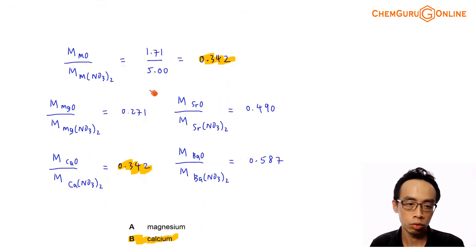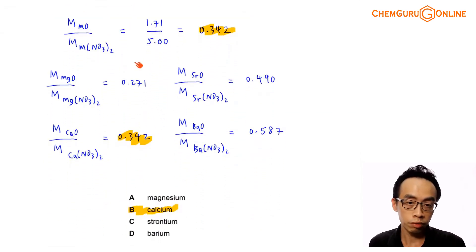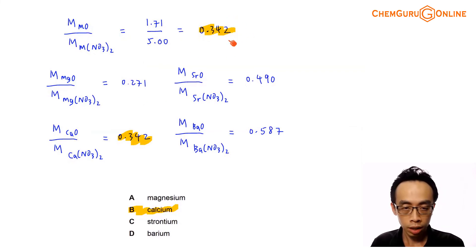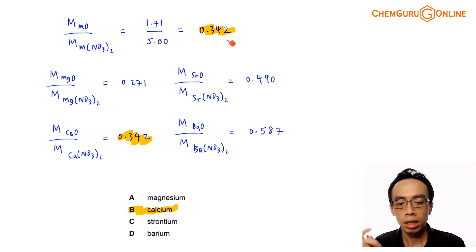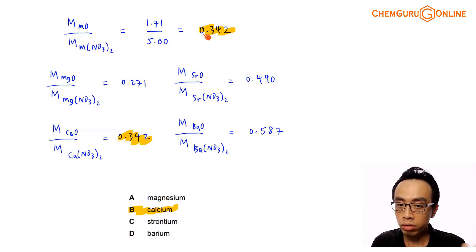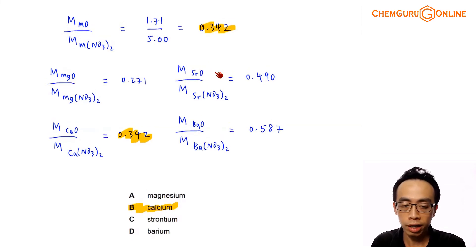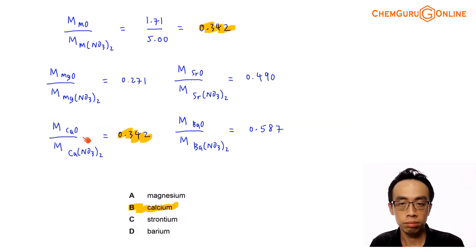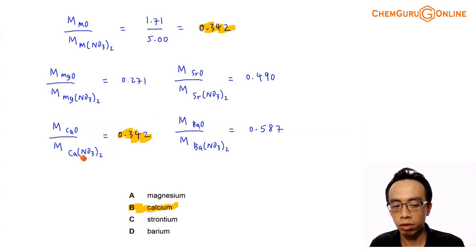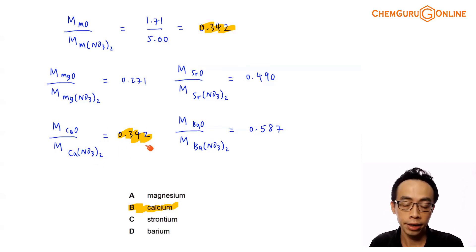Now we do the comparison. The mass ratio we calculated from the experimental data is 0.342, and we check which molar mass ratio — magnesium, calcium, strontium, or barium — matches this value. The one involving calcium fits very nicely: the molar mass of calcium oxide to calcium nitrate is 0.342. Therefore, we can identify that the unknown group 2 metal is calcium.